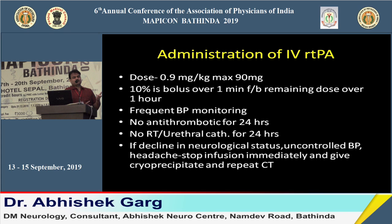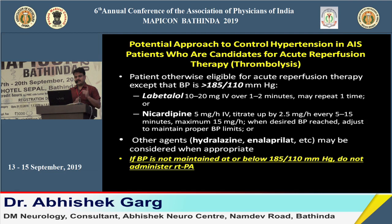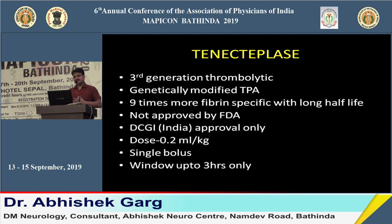During or within 24 hours of thrombolysis, if there is a decline in neurological status or the patient complains of severe headache, immediately give cryoprecipitate and request an urgent repeat CT. If the patient's BP is more than 185/110 before thrombolysis, labetalol or nicardipine can be used. If BP cannot be brought below 185/110 despite two doses, thrombolysis should not proceed.